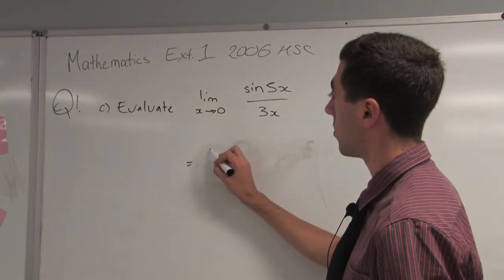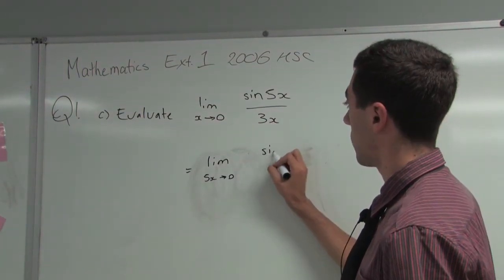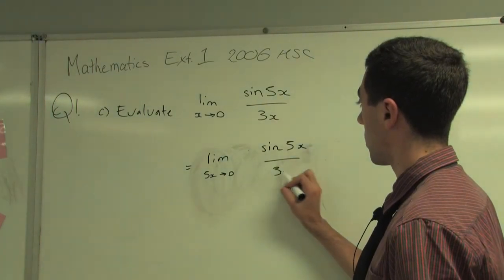So this would be equal to the limit as 5x approaches 0 of sin(5x) over 3x.